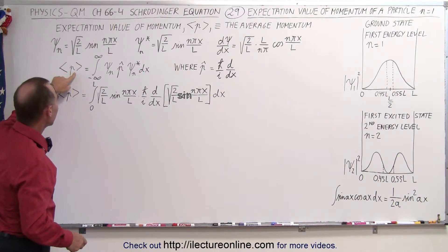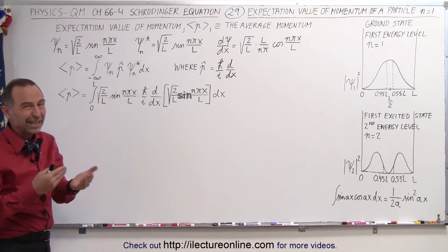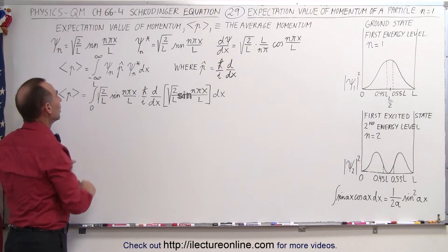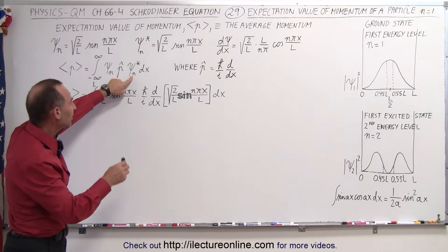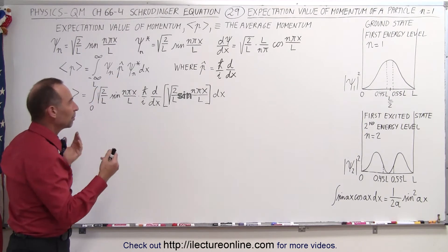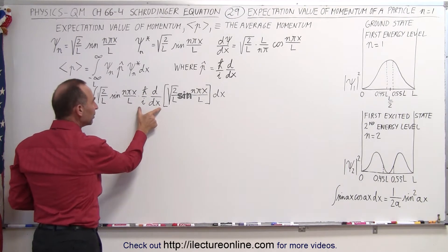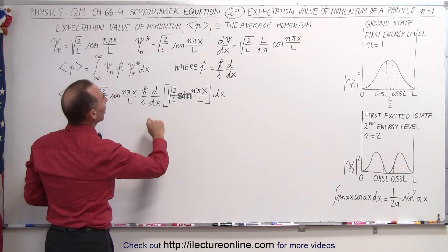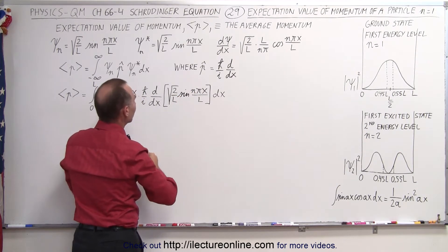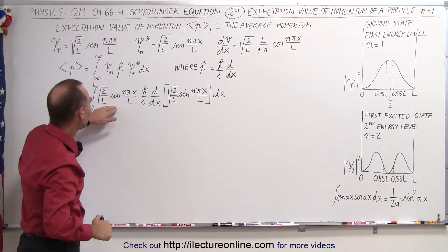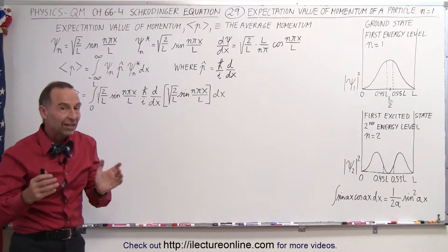By definition, the expectation value of the momentum of a particle in a one-dimensional box is the integral — from zero to L for the box — of the wave function times the momentum operator multiplied with the complex conjugate of the wave function. When we plug in the values, we have the wave function, the momentum operator, and then the complex conjugate. That should be the sine, since the complex conjugate of the wave function looks exactly the same as the wave function itself.